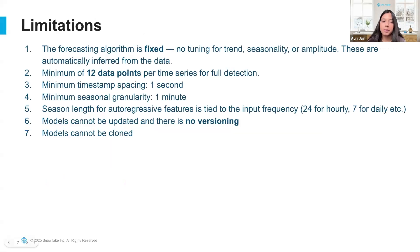Now let's go over some of the limitations. The main limitations to the forecasting model are that the algorithm is fixed so you cannot tune it for trend, seasonality, or amplitude. Additionally, you must have at least 12 data points per time series model for full detection.